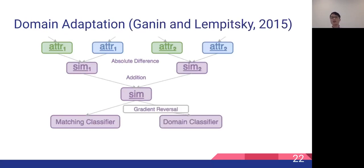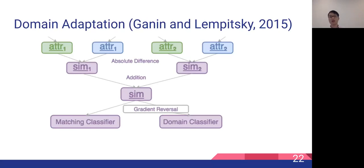We can also apply domain adaptation techniques from computer vision literature. In addition to the matching classifier, we pass the similarity vector to a domain classifier. Importantly, we create a gradient reversal layer between the domain network. This ensures the domain classifier tries to distinguish the source and target scenarios, while the rest of the network is encouraged to develop domain-invariant representations that are useful for transfer purposes because they don't distinguish between different scenarios.